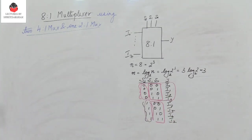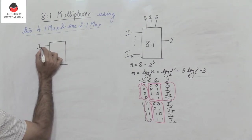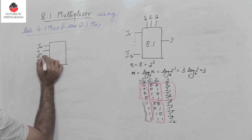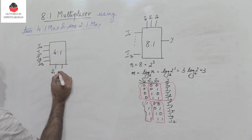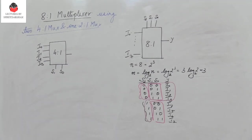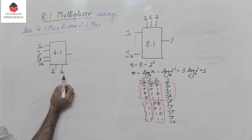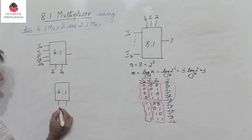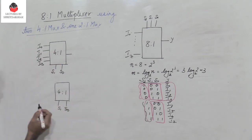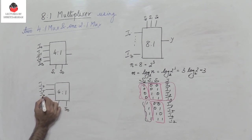So I use a 4-to-1 MUX with inputs i0, i1, i2, and i3. With a 4-to-1 MUX I need two select lines, S1 and S0. When S1 S0 is 0 0, i0 comes through; 0 1 gives i1; 1 0 gives i2; and 1 1 gives i3. Similarly, I use another 4-to-1 MUX with the same select lines S1 and S0, but with inputs i4, i5, i6, and i7.